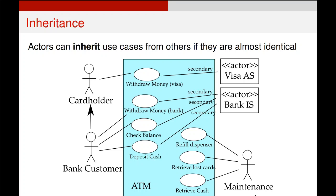The other thing is that you can also have some actors that inherit use cases from other actors. You can see an example on the left here, where our bank customer can also do everything that a cardholder can do. The arrow goes from the inheritor to the inherited actor, showing that the bank customer inherits everything from cardholder as well. This essentially allows us to show upgrading, membership, and different security and access levels within these different use cases.